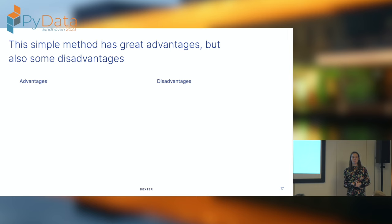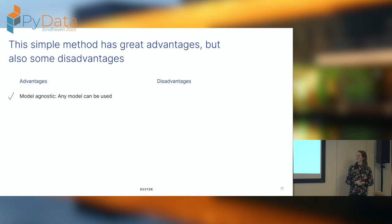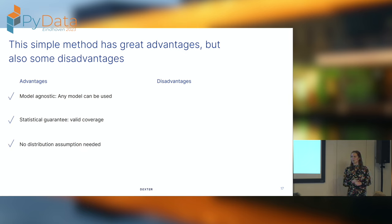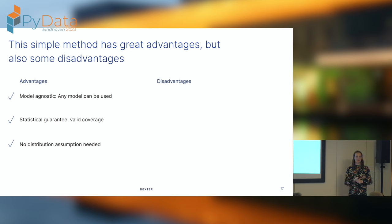This is actually quite a simple method that's nice to use, especially because you can almost always apply it — it's always a good starting point. It has many advantages. It's model-agnostic, so you just start with the model you're already using. It has a statistical guarantee, so you know coverage will be correct — which is not the case for most other methods. And you don't need to make any assumptions about a distribution; it really uses the distribution of your dataset.